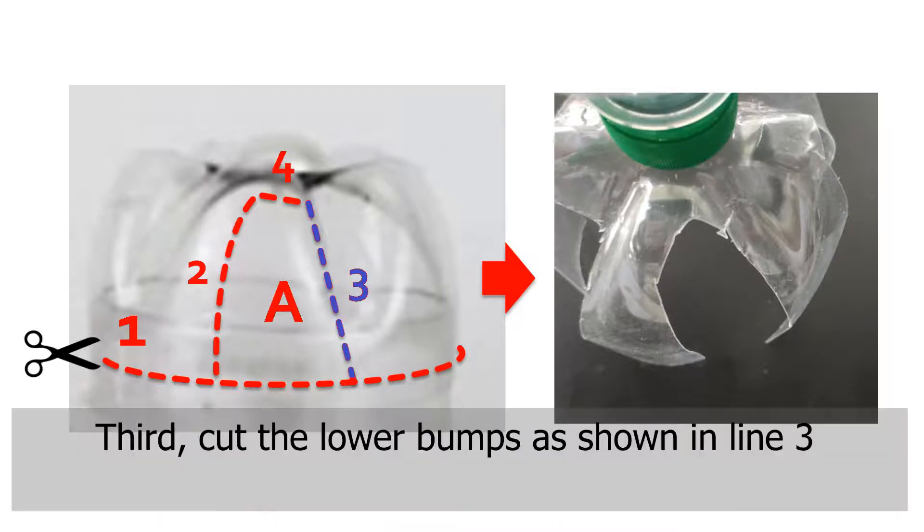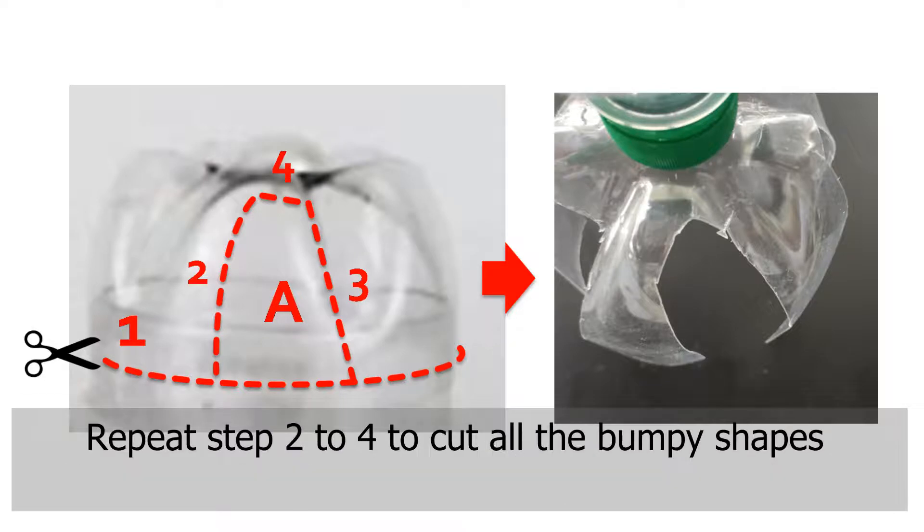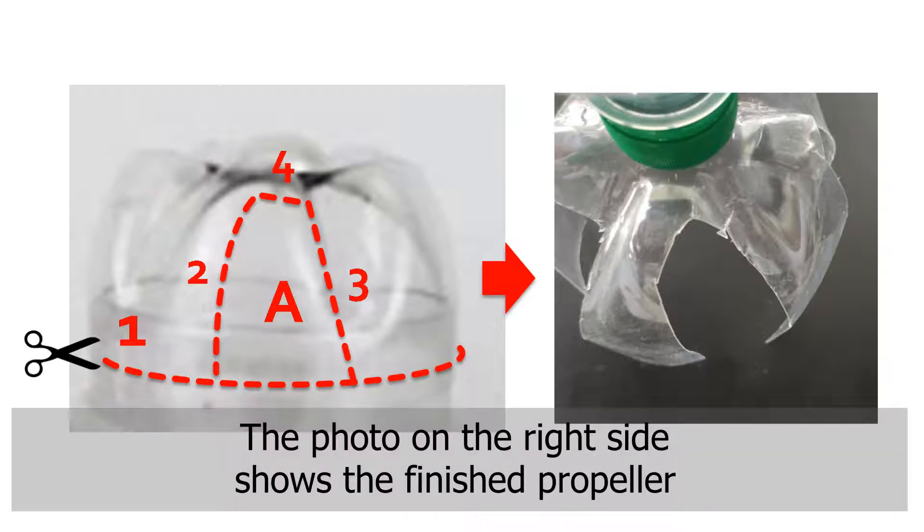Third, cut the low bumps, as shown in line three. Fourth, cut across line four to remove the piece marked as A. Repeat steps two to four to cut all the bumpy shapes. The photo on the right side shows the finished propeller.